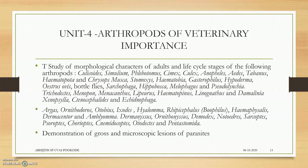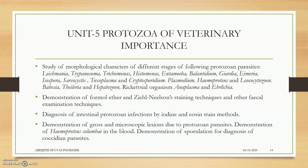In case of arthropods also, they will be dealing with the microscopic lesions, gross lesions, and the morphological features of the adult families. Regarding the protozoa of veterinary importance in Unit 5, we will be dealing with demonstration of gross and microscopic lesions due to protozoan parasites, identification of blood protozoans, coprological diagnosis of coccidia, Ziehl-Neelsen staining techniques, and other fecal examination techniques of main protozoa.